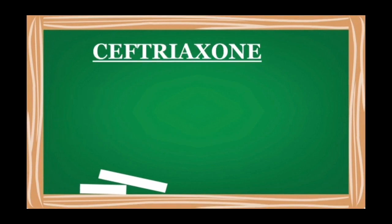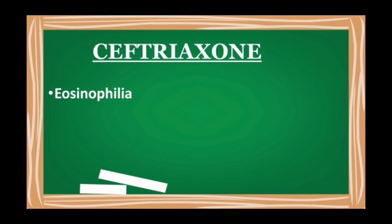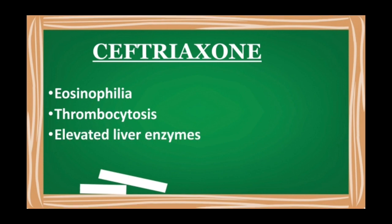Next is ceftriaxone, which belongs to the class of cephalosporins. Its main side effects are eosinophilia, which increases eosinophil count in the blood; thrombocytosis, where platelet count increases in the blood; and elevated liver enzymes.